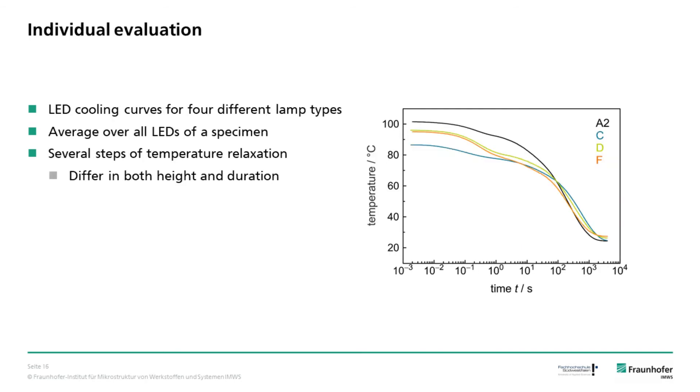Here you see the average cooling curve of the LEDs in four of the lamps in logarithmic time scale. You can recognize the different starting temperatures as shown on the slide before. Additionally, you see several steps of temperature relaxation for each of the lamps. While the lamps share the general position of these steps, they differ in their height and duration. To analyze these steps further, we use the time constant spectrum as shown in the next slide.